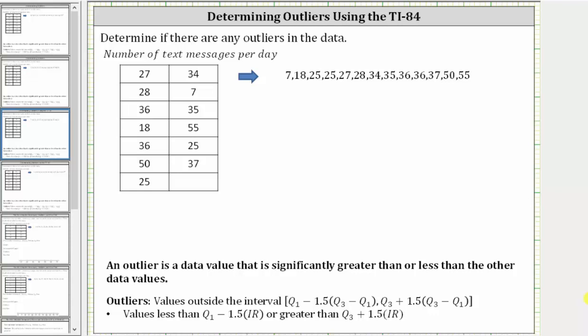This video will show two examples on how to use the TI-84 to determine whether a data set has any outliers. An outlier is a data value that is significantly greater than or less than the other data values.